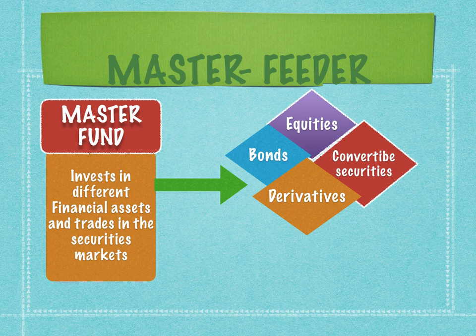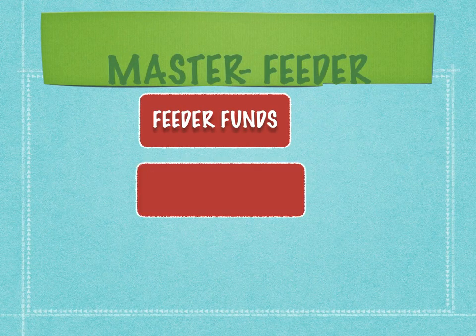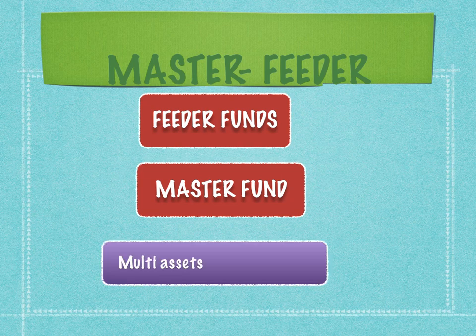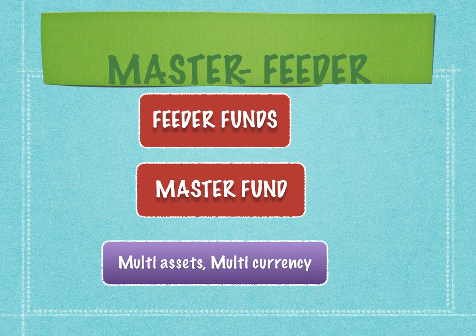The master fund is actually the operating arm of the hedge fund. It employs the fund manager, makes the investments, and has technical analysts, fundamental analysts, and quantitative research analysts, so the entire team decides how to trade in different securities. The feeder funds feed the master fund, and the master fund makes the investments in different assets, currencies, and countries. In summary, the feeder funds feed the master fund, and the master fund is the investment arm that trades across different assets and markets.